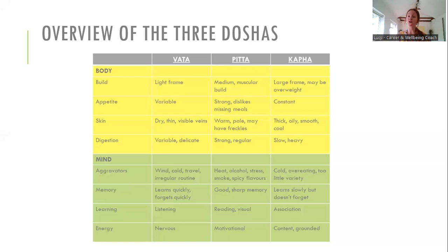Kapha people are predominantly the Kapha Dosha, so there's more of a large frame here — they may be prone to being overweight. Their appetite is constant, more of a grazing style. Their skin is very thick, oily, beautifully smooth and cool — like the dewy skin you see on young children. Their digestion may be a bit slow and heavy. They're aggravated by cold weather and overeating. Their memory: they learn quite slowly but then don't forget — quite the opposite of Vata. They learn by association, by doing, and their energy is quite content and grounded.